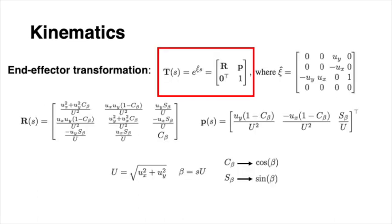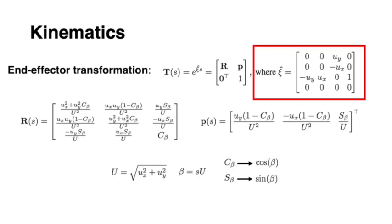The constant curvature transformation matrix T of the robot backbone frame along the arc length S of a segment of overlapped bellows tubes can be computed using the matrix exponential. Xi is the matrix containing the equilibrium curvature components.